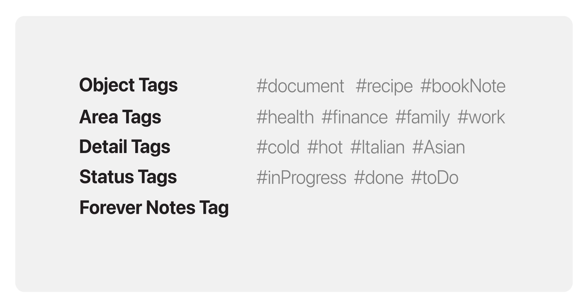The Forever Notes tag is a special tag used to organize system-level notes. Every Forever Notes system node — like home, hubs, or journal notes — gets the tag #ForeverNotes. This makes it easy to find all the core elements of the framework whenever you need them. The philosophy in Forever Notes is that every note should have at least one tag. This keeps your notes interconnected and ensures no information gets lost. You also have the option to create an inbox smart folder that automatically shows all notes without any tags yet, making it easy to keep track of unorganized content.